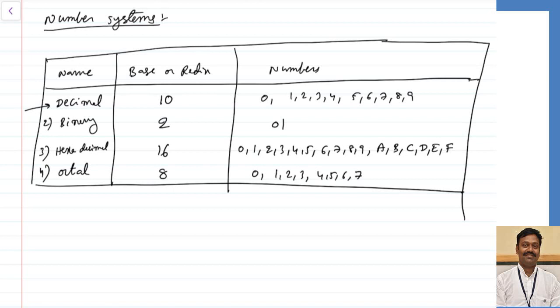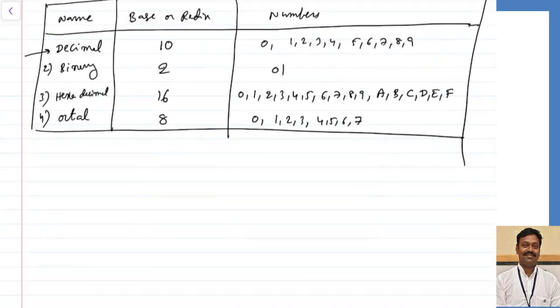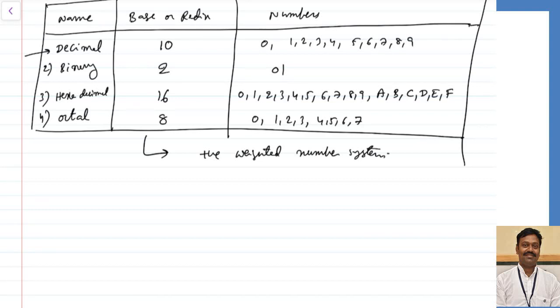There are many other types of number systems — we can take base 7, base 6, base 20 — but they are not very famous. All the number systems we are going to discuss are called positive weighted number systems. That means whatever weight you multiply, that will be a positive integer only.